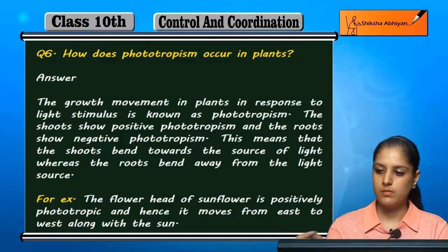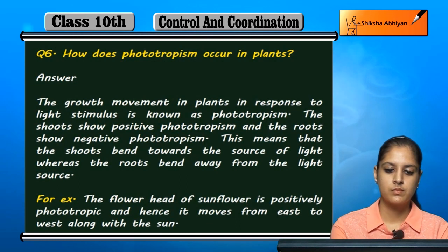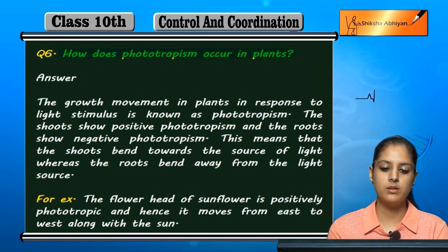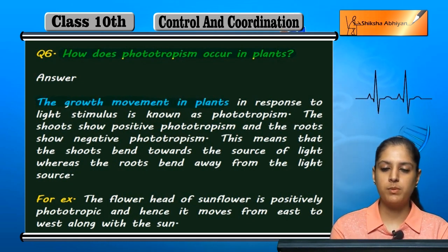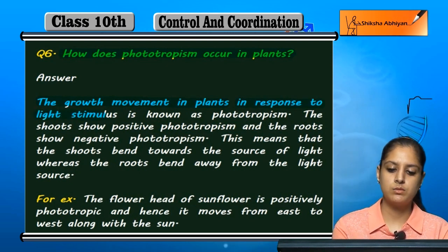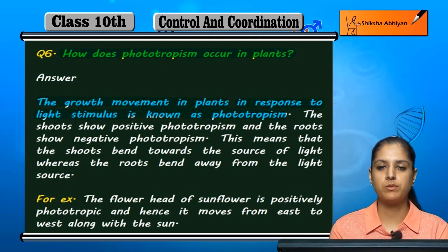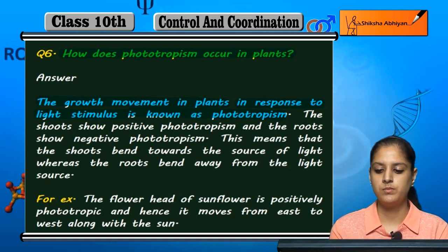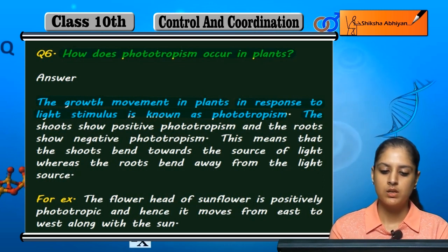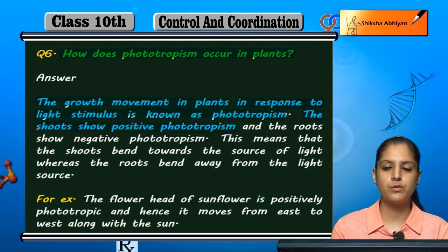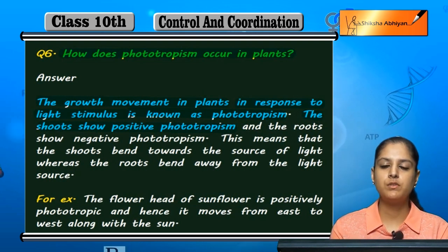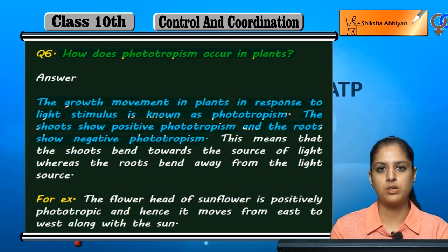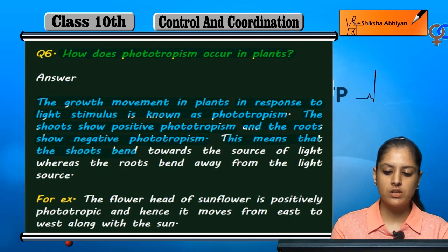Question number six: how does phototropism occur in plants? The growth movement in plants in response to light stimulus is known as phototropism. The shoots show positive phototropism and roots show negative phototropism.